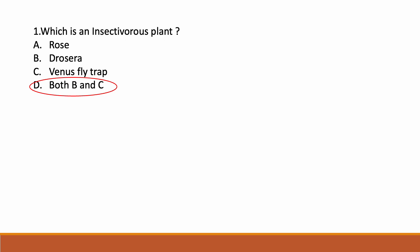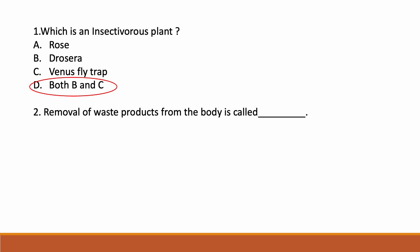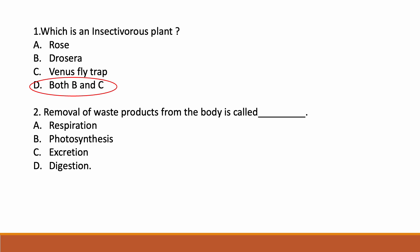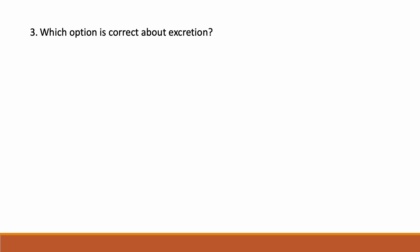Removal of waste products from the body is called — Option A: Respiration, Option B: Photosynthesis, Option C: Excretion, Option D: Digestion. Correct answer is Option C: Excretion. Which option is correct about excretion? Option A: Only animals excrete.